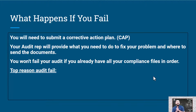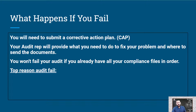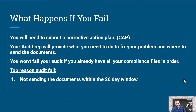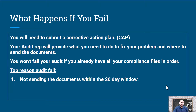The top reasons why people fail their audit are nothing crazy — they're actually very simple. The number one reason is they don't send their documents within the 20-day window. The documents are straightforward and you should have them anyway. And if your DOT gets suspended, there's a minimum 30-day wait — even if you fix it the next day, you still have to wait the 30 days.